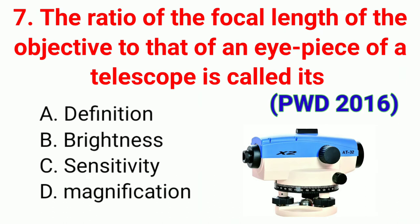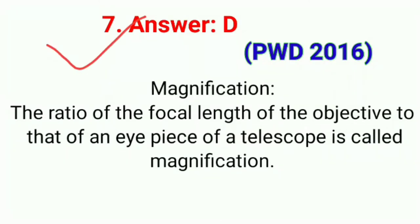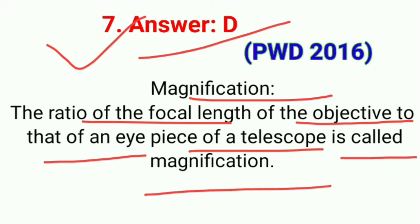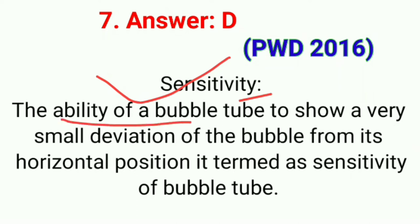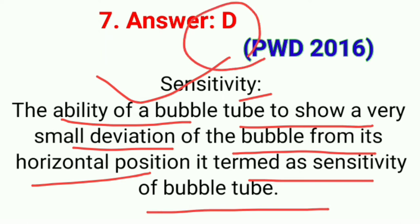Question number seven: The ratio of focal length of the objective to that of an eyepiece of a telescope is called. The correct answer is option D, magnification. The ratio of focal length of the objective to that of an eyepiece of a telescope is called magnification. Sensitivity is the ability of a bubble tube to show a very small deviation of the bubble from its horizontal position.